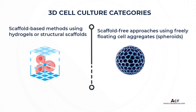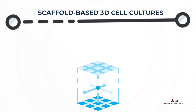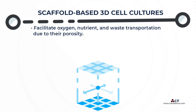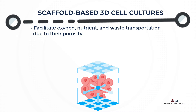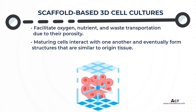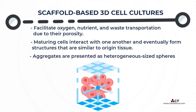Each type of 3D cell culture has its own set of benefits and drawbacks. Scaffolds are useful supports for 3D cell culture. They facilitate oxygen, nutrient, and waste transportation due to their porosity. As a result, cells can proliferate and migrate within the scaffold web before adhering to it. As they grow, the maturing cells interact with one another and eventually form structures similar to the tissues from which they originated. Most of the time, those aggregates are presented as heterogeneous-sized spheres known as spheroids, the cell structure commonly used for drug screening and any other 3D cell culture application.